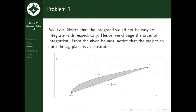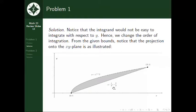From the given bounds, notice that the projection onto the xy-plane is as illustrated in the graph below. Originally, the integral uses vertical strips, which would have given us values of y from the curve y equals the square root of x minus 2. However, instead of that, we will be using horizontal strips, which will give us values of x from the curve y equals the square root of x minus 2, so x equals y squared plus 2, to the line x equals 3y plus 2. The limits of integration for y would be 0 to 3.